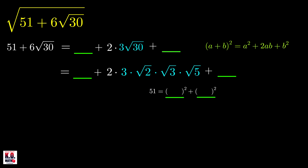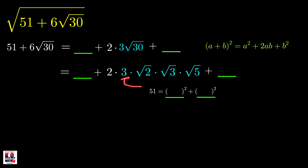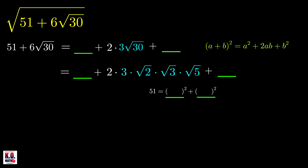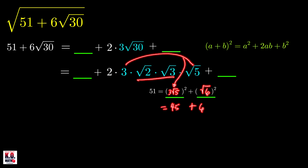Now you can do guess and check. For example, if we try 3√2 and √15, the square of 3√2 is 9 times 2 which is 18, plus the square of √15 which is 15 — that gives 33, not 51. If we try 3 and √30, we get 9 plus 30 which is 39, also not 51. But if we try 3√5 and √6, the square of 3√5 is 9 times 5 which is 45, plus 6 — that equals 51.